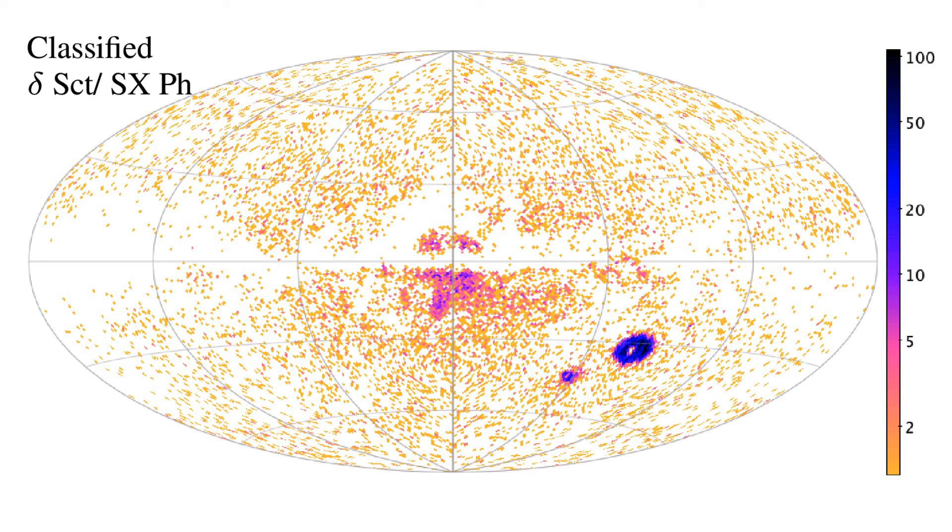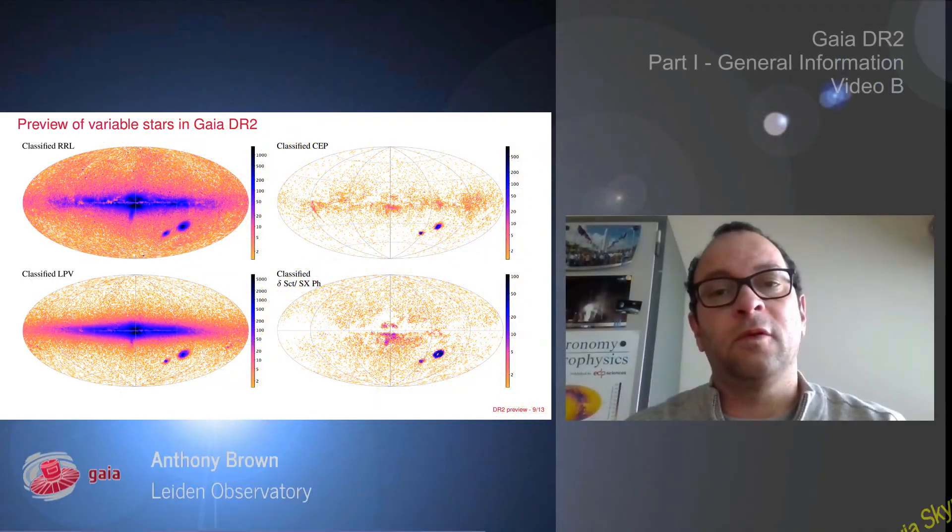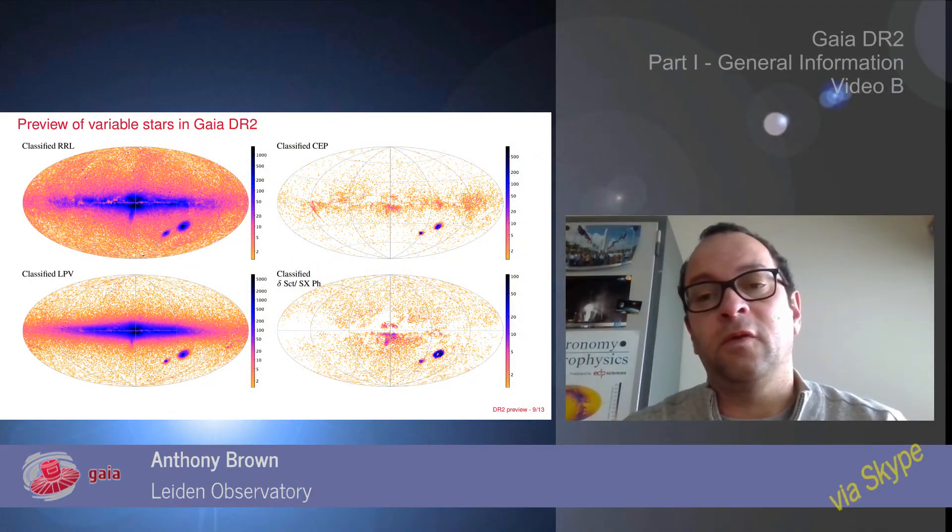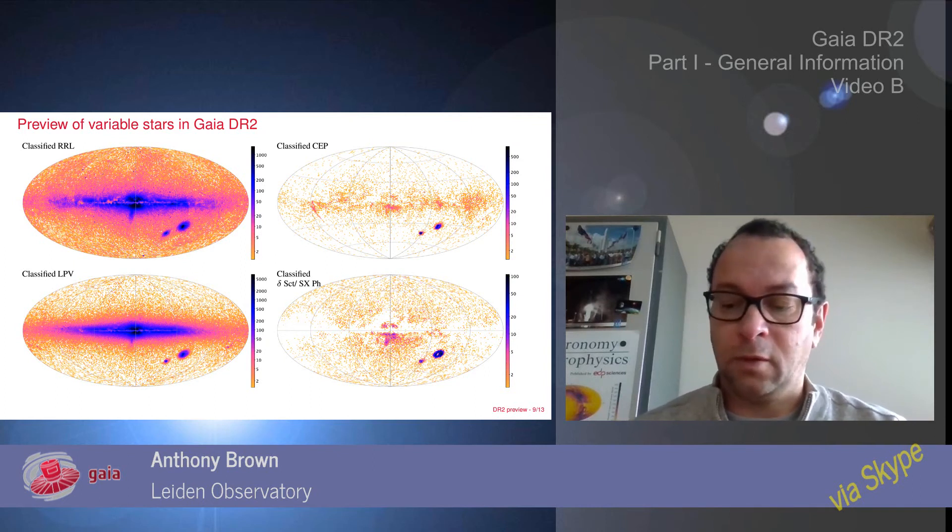At the bottom, you see the distribution over the sky of these Delta Scuti and SX Phoenicis pulsating variables. It's a large catalogue, half a million variable stars. It's really an all-sky survey, something that is not normally achieved from the ground. This is really the power of Gaia that you can visit every corner of the Milky Way in order to do astronomy.